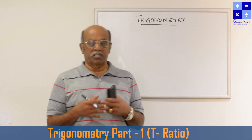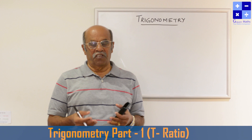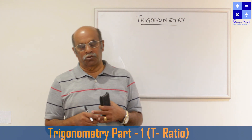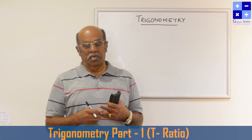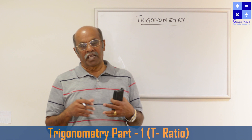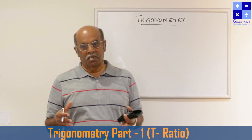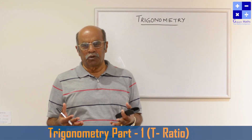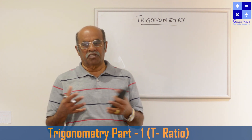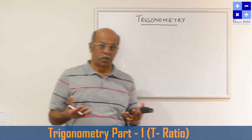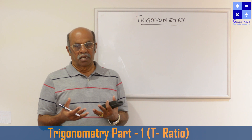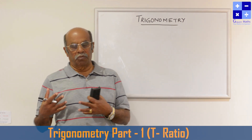So before we start, we have to define something — we have to define a unit, we have to define some ratios. Initially, trigonometry came into existence with a triangle. A triangle is a geometrical figure, a closed geometrical figure having three sides and hence three angles also. So when three sides are given, three angles are there, and with the help of this, trigonometry started.